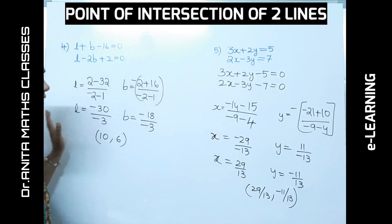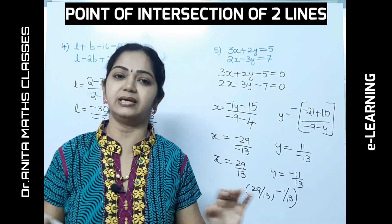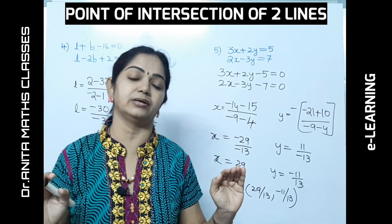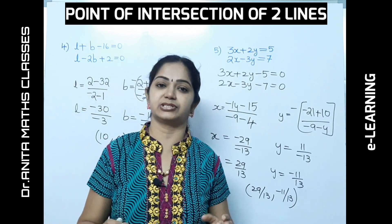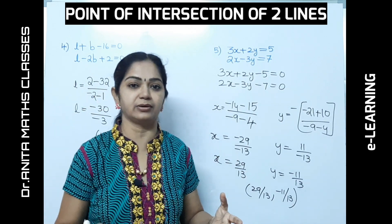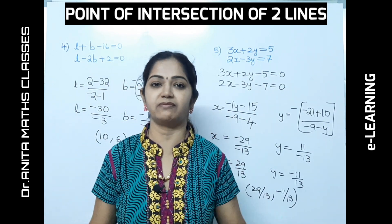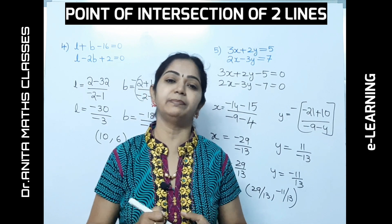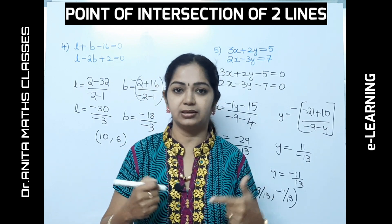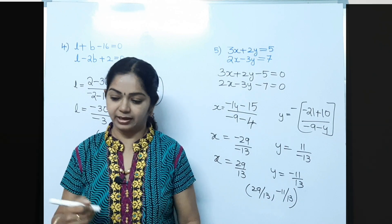I have solved five problems for you. For any two intersecting lines, you can find the point of intersection within three seconds using this trick. I hope you have understood — make use of it in your classes. Thank you all.